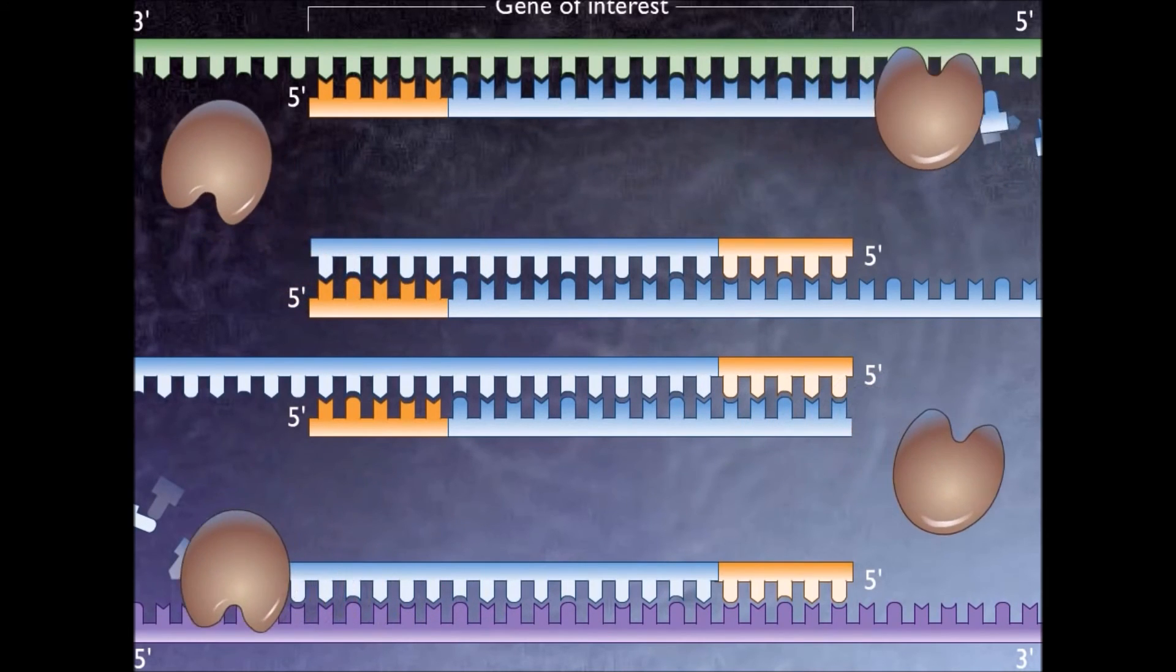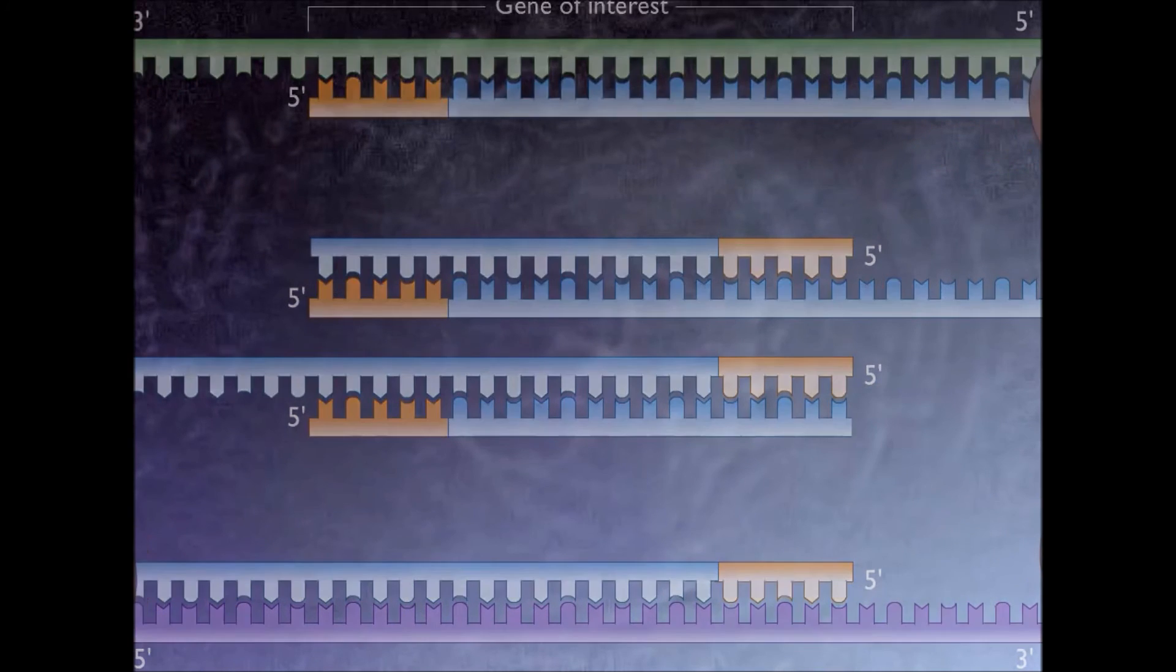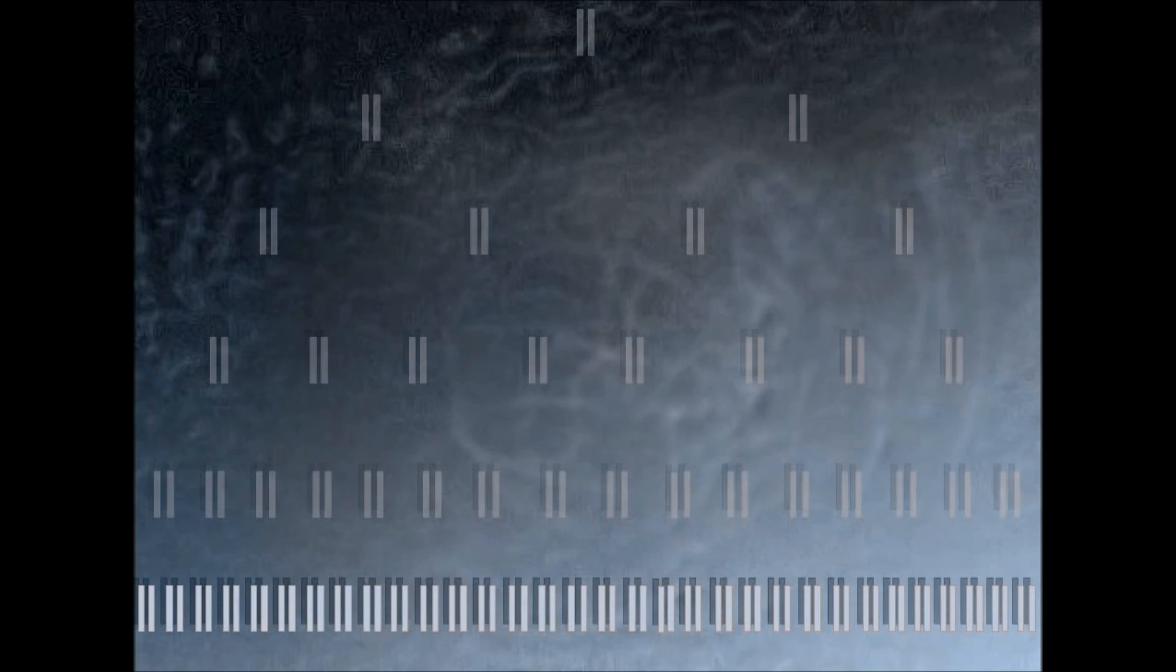The bases complementary to the template are coupled to the primer on the three side. The polymerase adds dNTP from five to three, reading the template from three to five side. Bases are added complementary to the template. This process is repeated for 30 or 40 cycles.